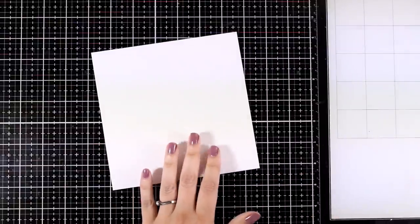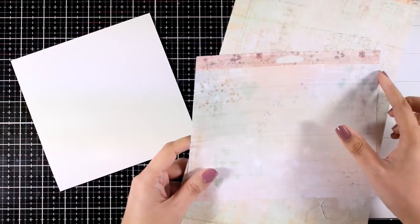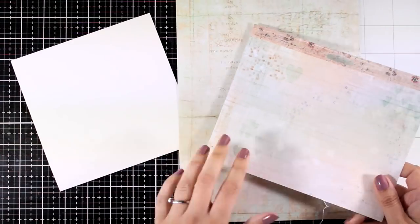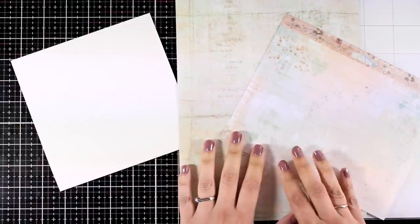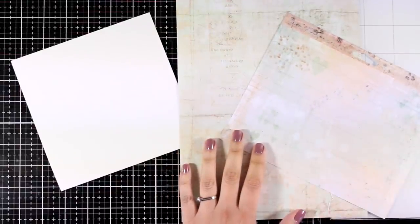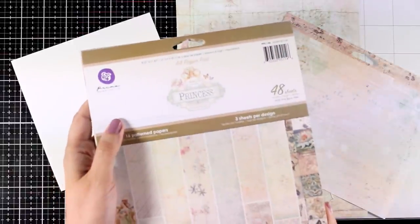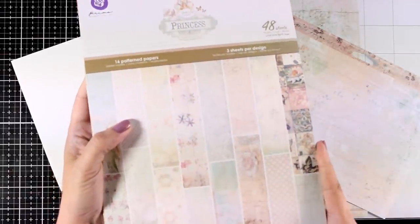For today's project I'm revisiting a favorite mixed media technique where I'm using older patterned paper, cutting it out into different pieces and putting everything together for my background. This technique is going to give you lots of texture and you can use up patterned paper that you have been hoarding for ages.